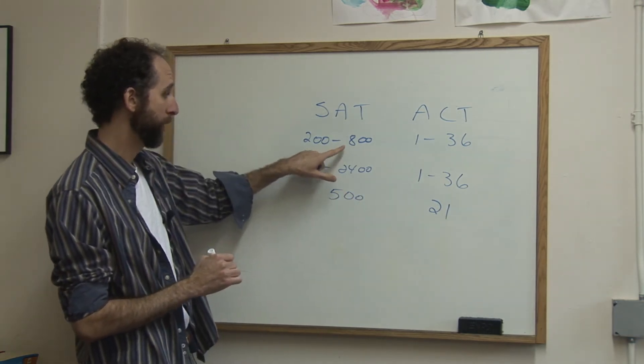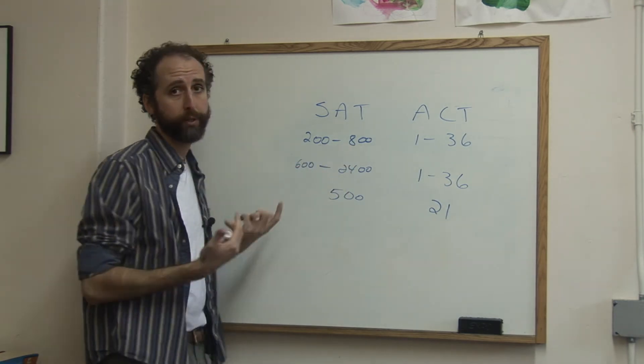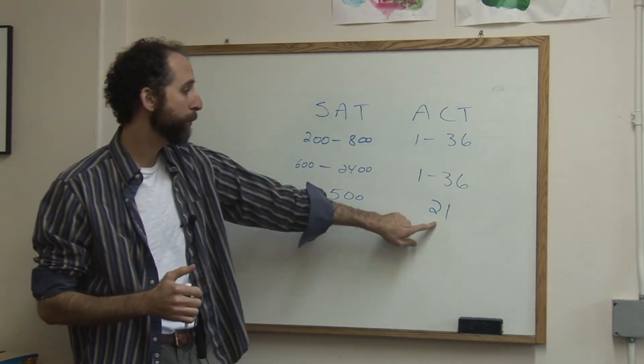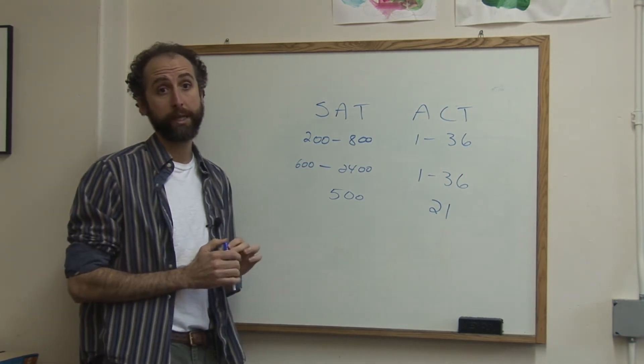So 500 out of 800 is the national average, which makes sense, it's actually in the middle of these two, and they did that on purpose. So a 21 on the ACT is about equivalent to a 500 on the SAT.